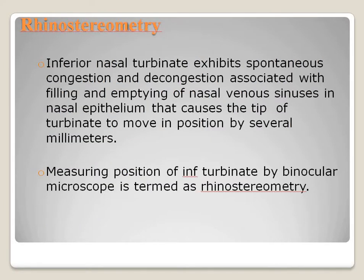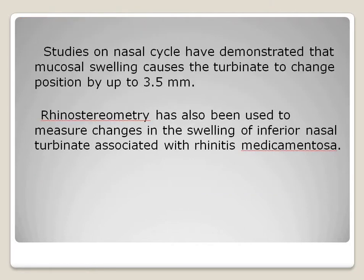Rhinostereometry: the inferior nasal turbinate exhibits spontaneous congestion and decongestion associated with filling and emptying of the nasal venous sinuses, causing the tip of the turbinate to move in position by several millimeters. Measuring the position of the inferior turbinate by binocular microscope is termed rhinostereometry. Studies on the nasal cycle have demonstrated that mucosal swelling causes the turbinate to change position by up to 3.5 millimeters. Rhinostereometry has also been used to measure changes in swelling of the inferior nasal turbinate associated with rhinitis medicamentosa.